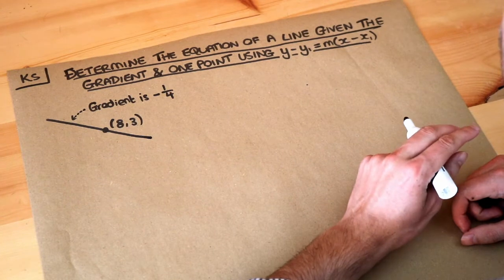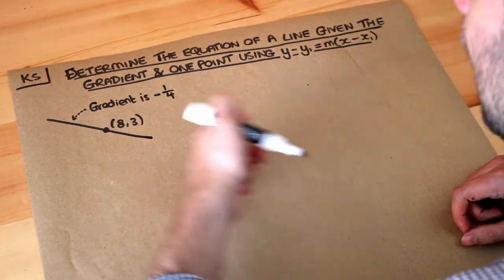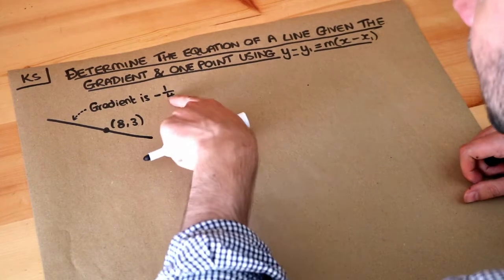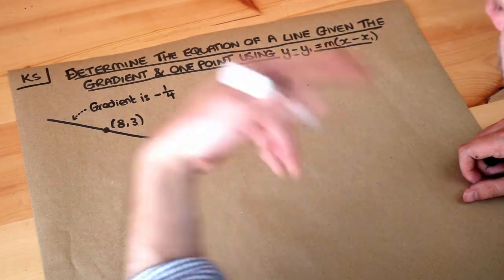Now you may have learned at something like GCSE how to do this kind of question. You'd use y equals mx plus c, you sort of fill in the m and you sub in these values to work out the c.